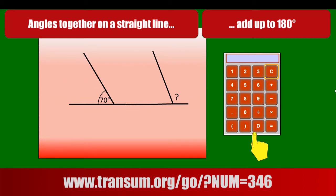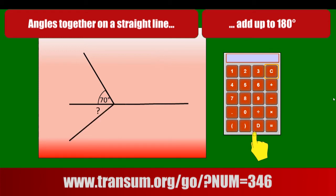This is a good example of when not to use this theorem. The angles are not together on the straight line — they're on a straight line, but they're not together. So we can't use that theorem. Here are two angles that are together on a straight line, but they're not on the same side of the straight line. So again, this theorem doesn't work in this case. They must be together, and they must both be on the same side of the straight line.